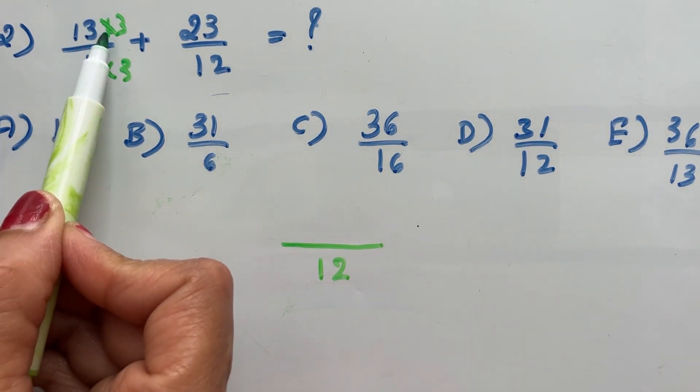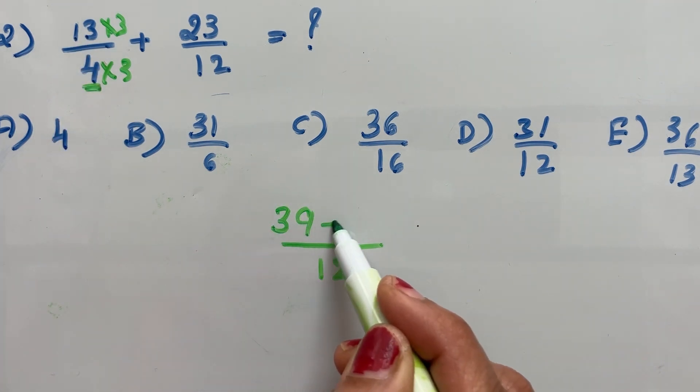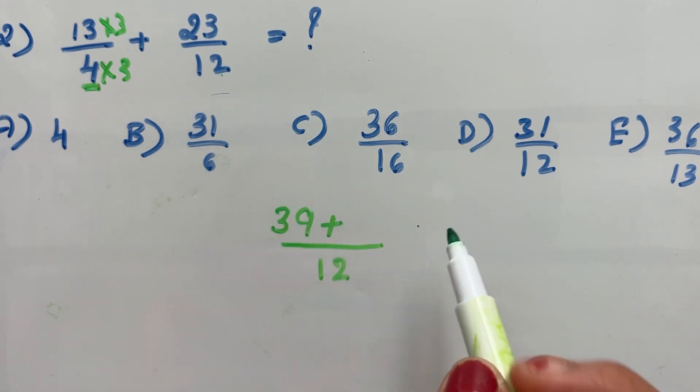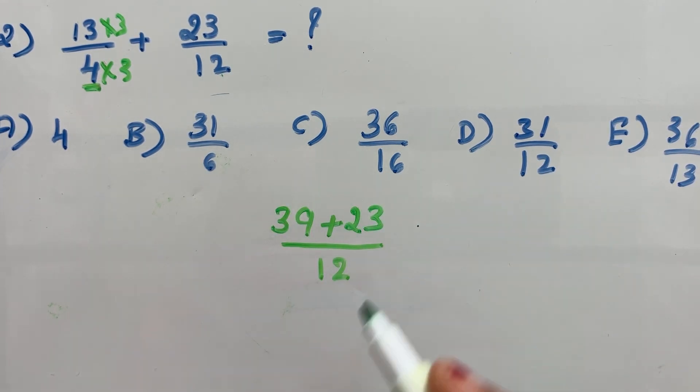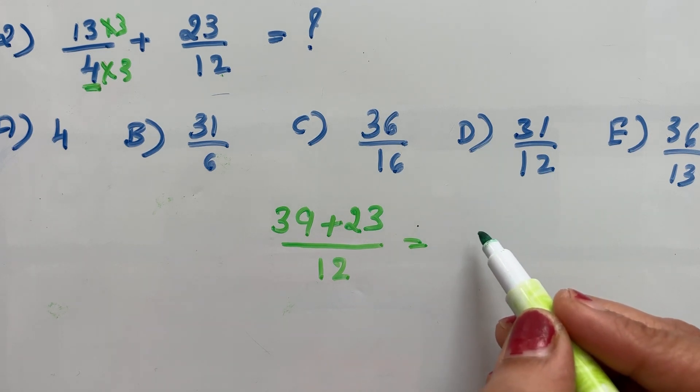That means the numerator became 13 times 3, which is 39. Plus this is already 12, so 23 as it is.